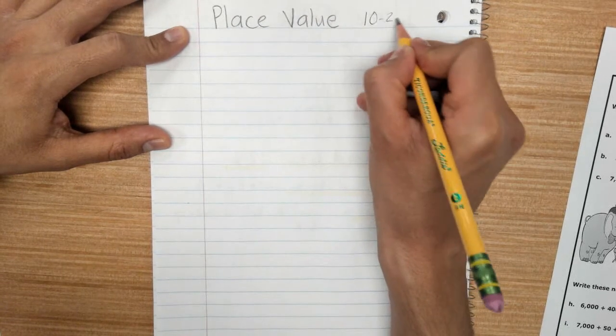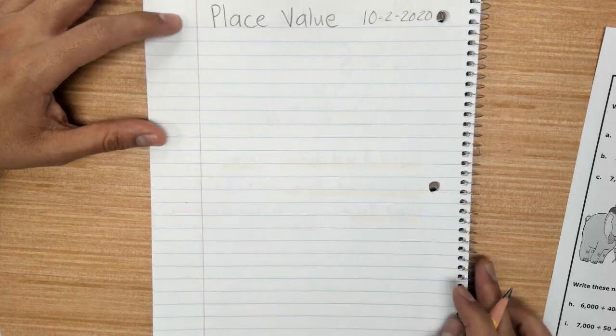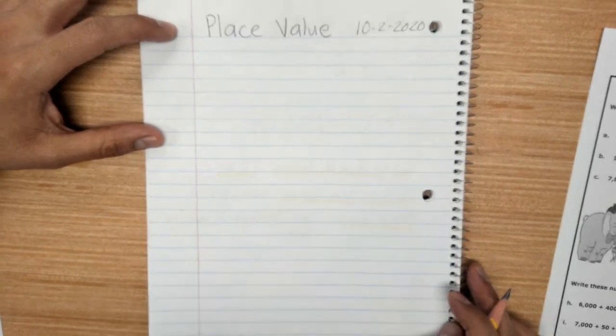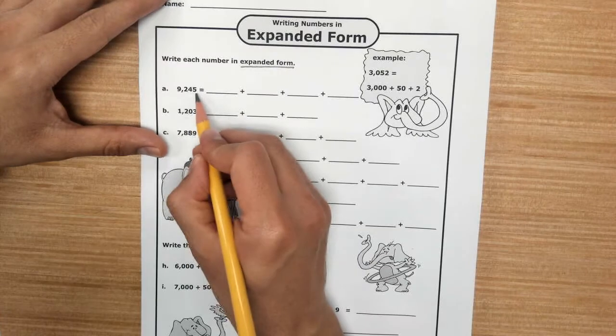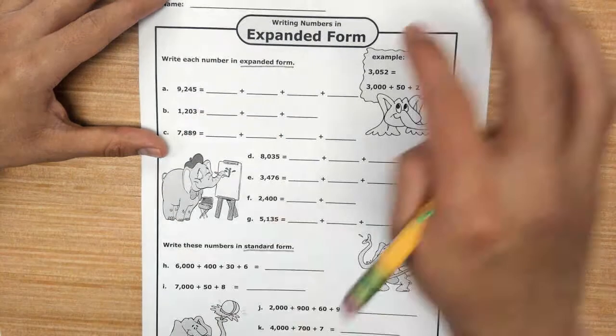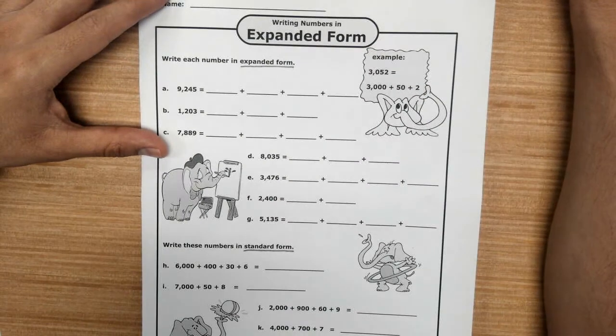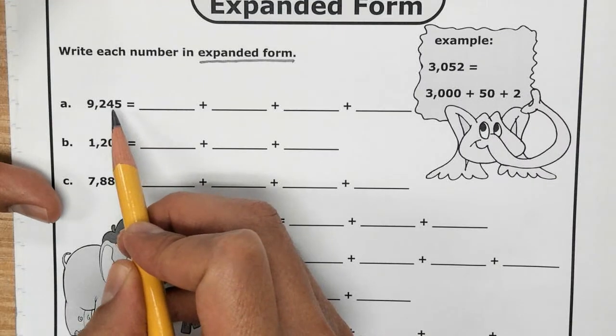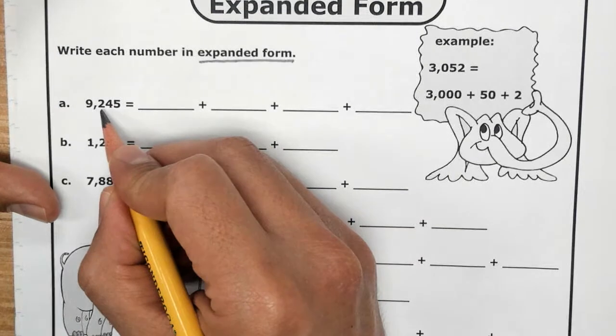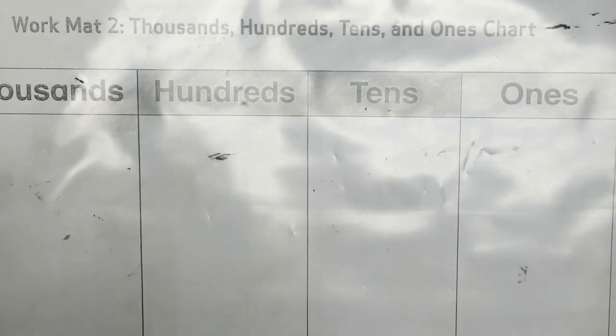We're going to write a number in expanded form. I'm going to look at the first example. There are four digits: one, two, three, four — four digits. I can see I have ones, tens, hundreds, thousands. I'm going to write that number on my place value chart right here.